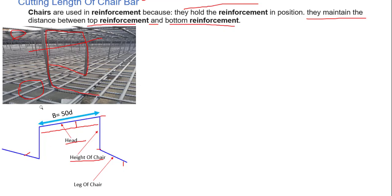Normally we use for the head a value of 50D, meaning 50 times the diameter of the chair bar. For the head we will use B, and for the height we will use D. For the leg, denoted as A, the formula is: A = 2 × spacing + 3 inches, or in millimeters, A = 2 × spacing + 50 mm.